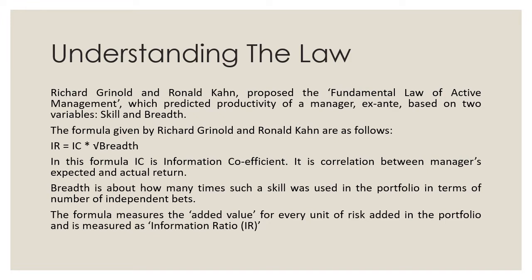The Information Coefficient is essentially a correlation between two variables: the manager's expected return and actual return — it highlights how well a manager forecasts. Breadth is about how many times such a skill was used in the portfolio in terms of number of independent bets. Using these two parameters, the law gives an Information Ratio, which is nothing but the added value for every unit of risk added to the portfolio.